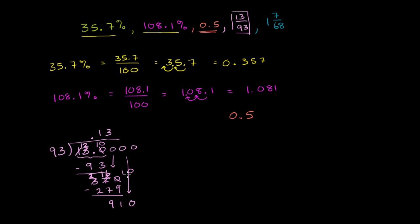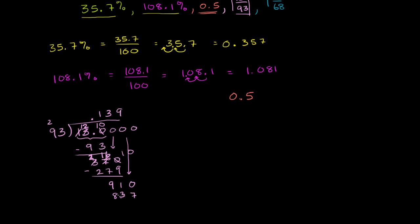How many times does 93 go into 370? It looks like it would go about 3 times. 3 times 93 is 279. When we subtract, we get, let's regroup. 10 minus 9 is 1. Now we have a 6 here, let's regroup again. 16 minus 7 is 9, 2 minus 2 is 0. So we're left with 91. Bring down another 0. 93 goes into 910 nine times. 9 times 93 is 837. We can keep going here, but I think this is enough for us to make the comparison. So 13 over 93 is equal to 0.139, and we can keep going.